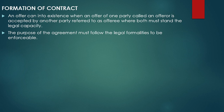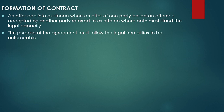Formation of contract: a contract comes into existence when an offer made by one party, called the offeror, is accepted by another party, referred to as the offeree, where both must have the legal capacity to make a contract. The purpose of the agreement must fulfill all legal formalities to be enforceable; if it omits any legal formalities, it will not be enforceable in any court of law.